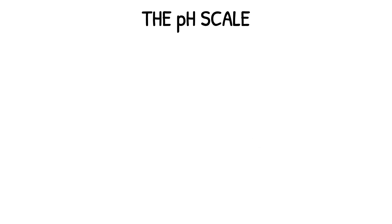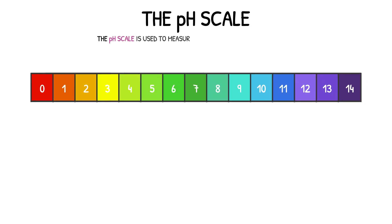All aqueous solutions, including those found in many household chemicals, are either acidic, alkaline or neutral. The pH scale can be used to measure how acidic or alkaline these substances are.